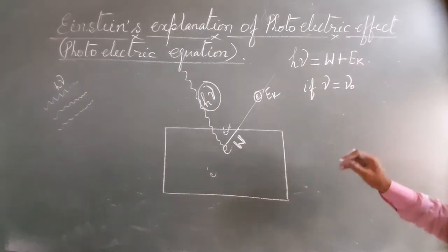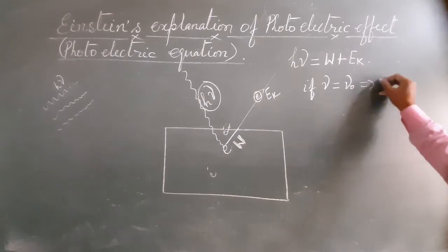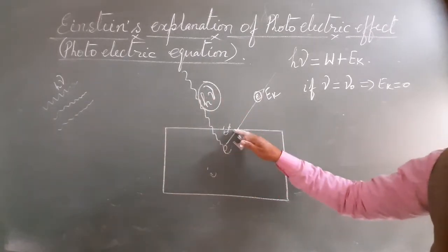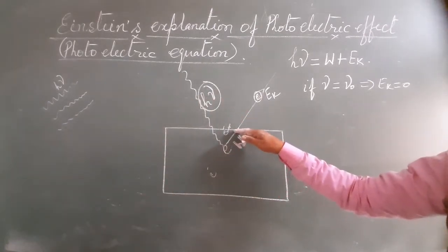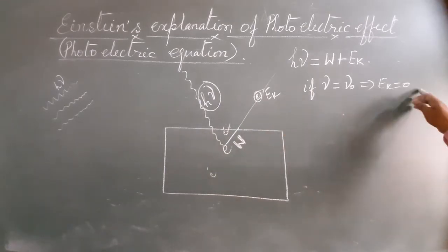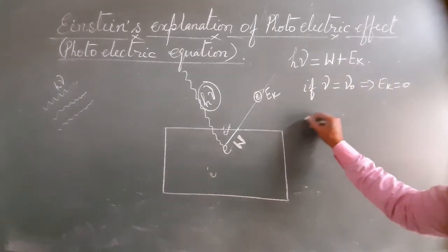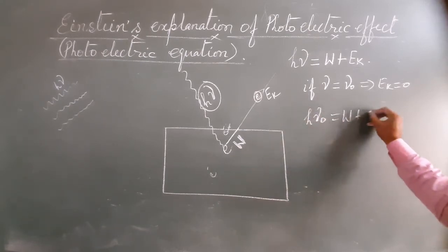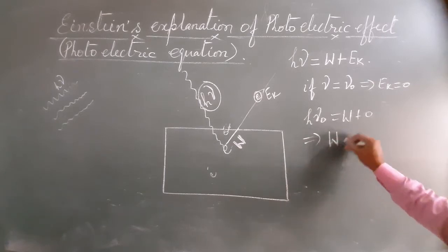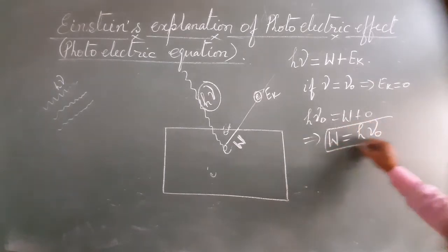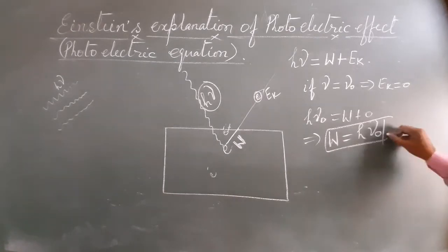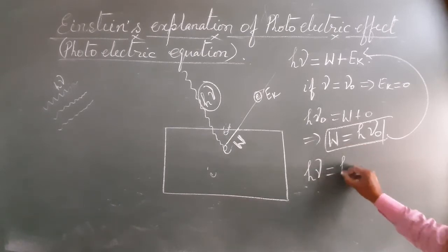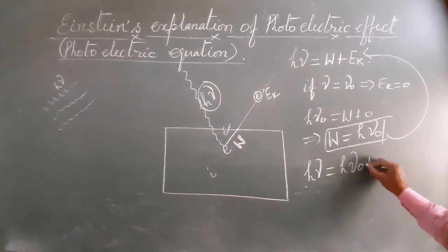But if the incident light photon has frequency equal to threshold frequency, then what will happen to EK? At this moment there will not be any kinetic energy. Because the full energy will just be used to take it out from the surface. So EK is equal to zero. Therefore, H nu naught is equal to W plus zero. So work function is equal to H nu naught. Aur ye value is relation mein hum rakh degay.